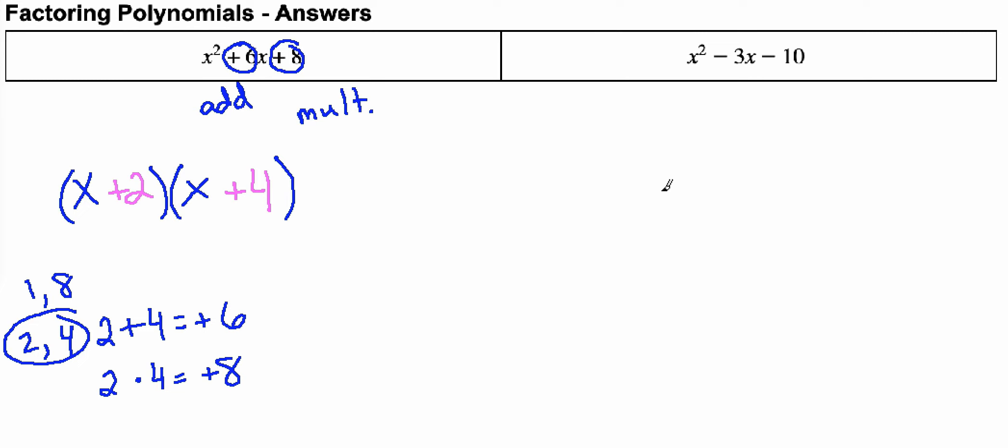In the other problem, x squared minus 3x minus 10, I want a number that's going to multiply to minus 10 and add to negative 3.